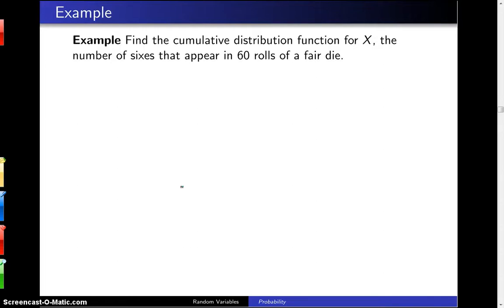Find the cumulative distribution function for the random variable x, which is the number of sixes that appear in 60 rolls of a fair die. In this particular case, the random variable x is a discrete random variable.